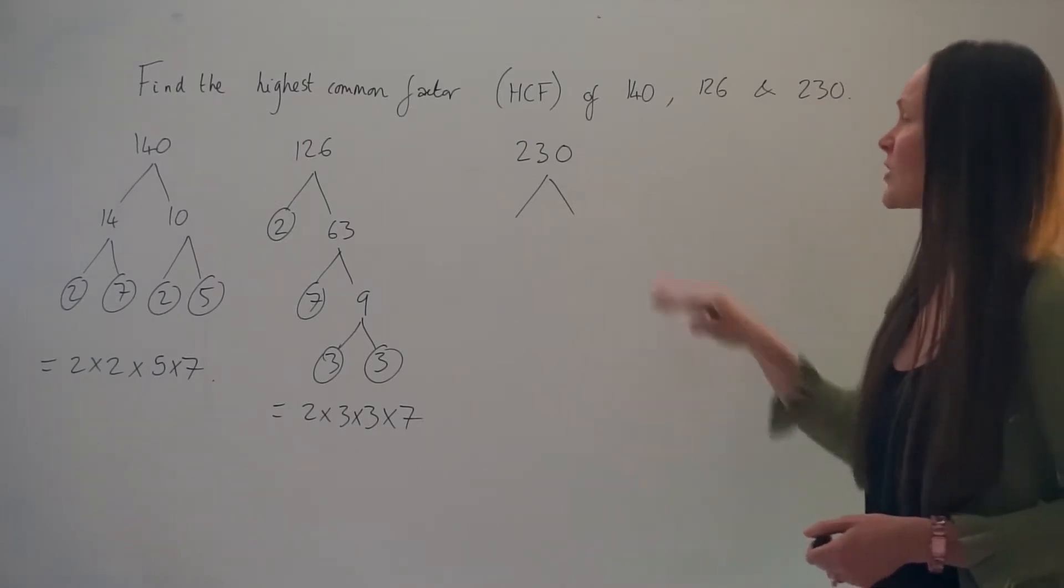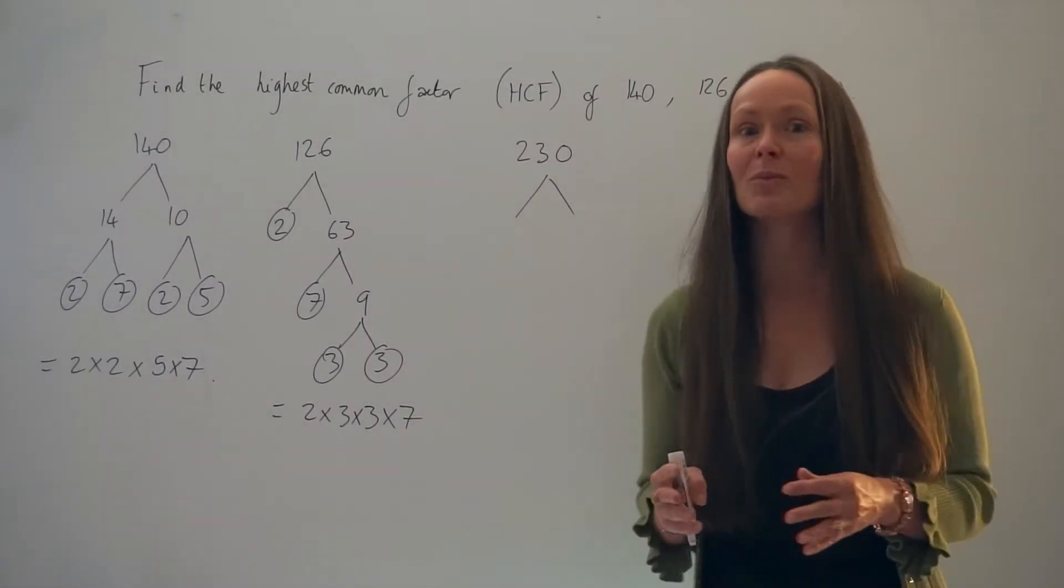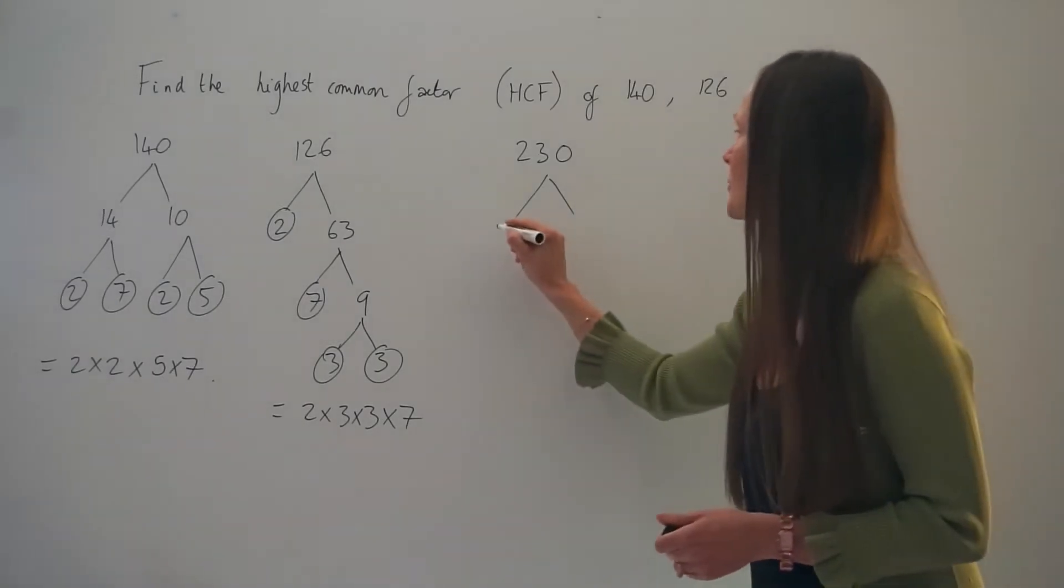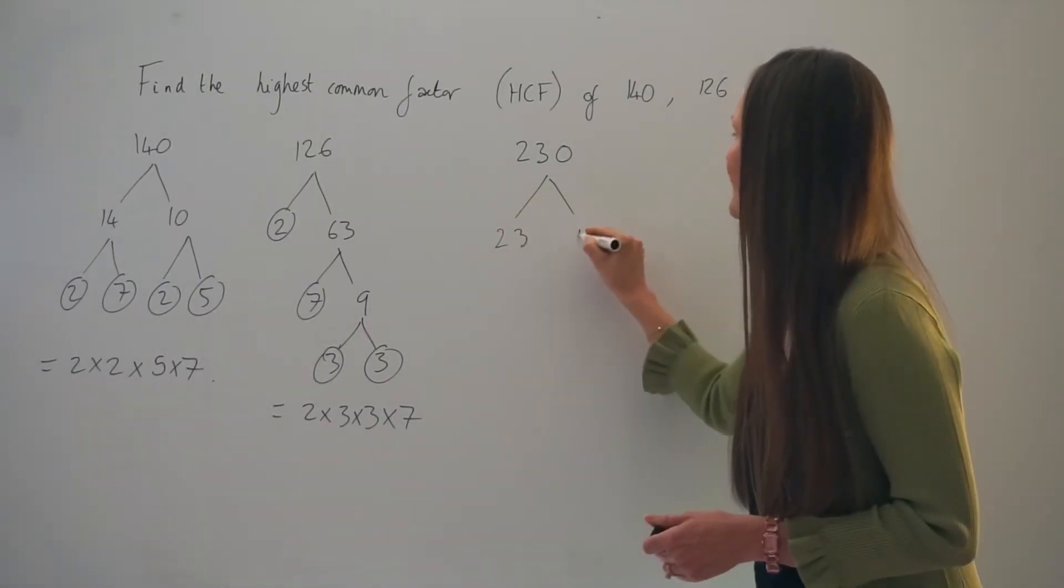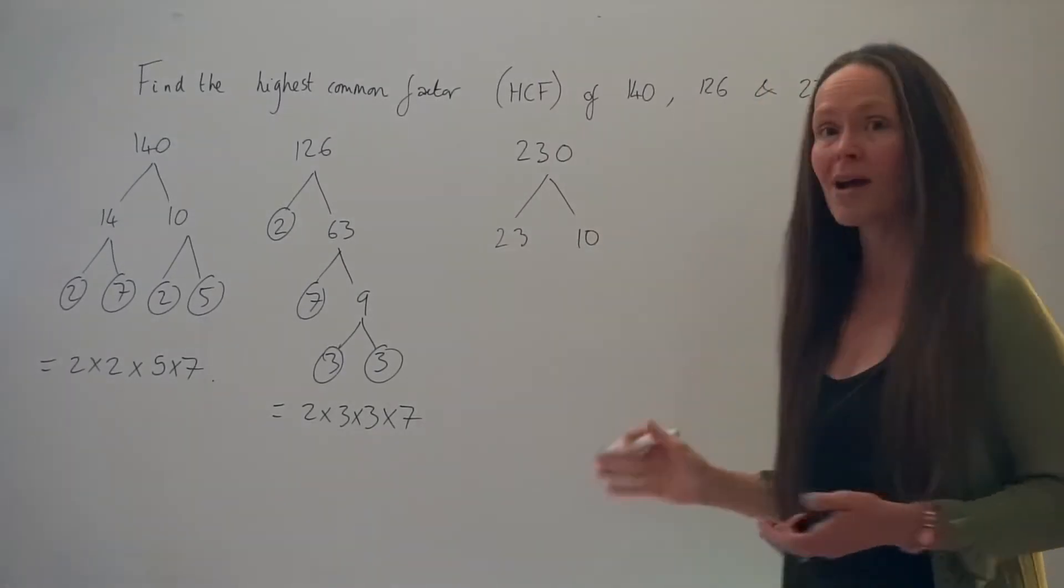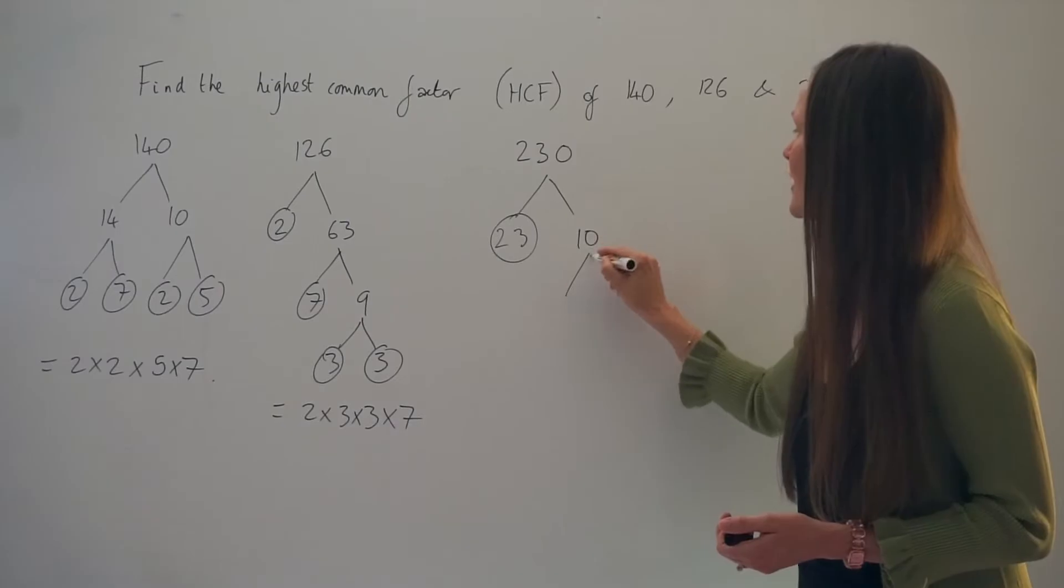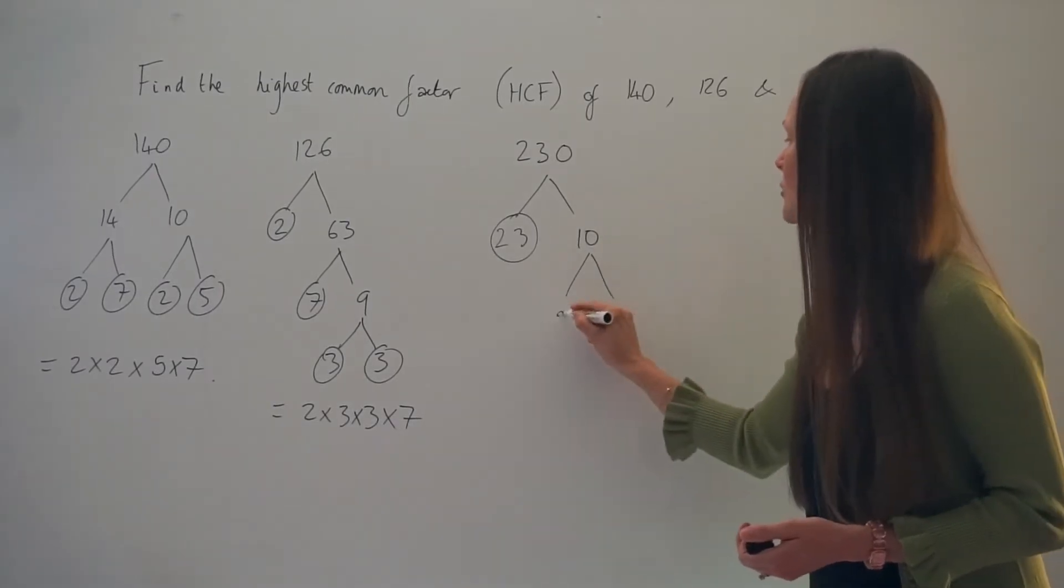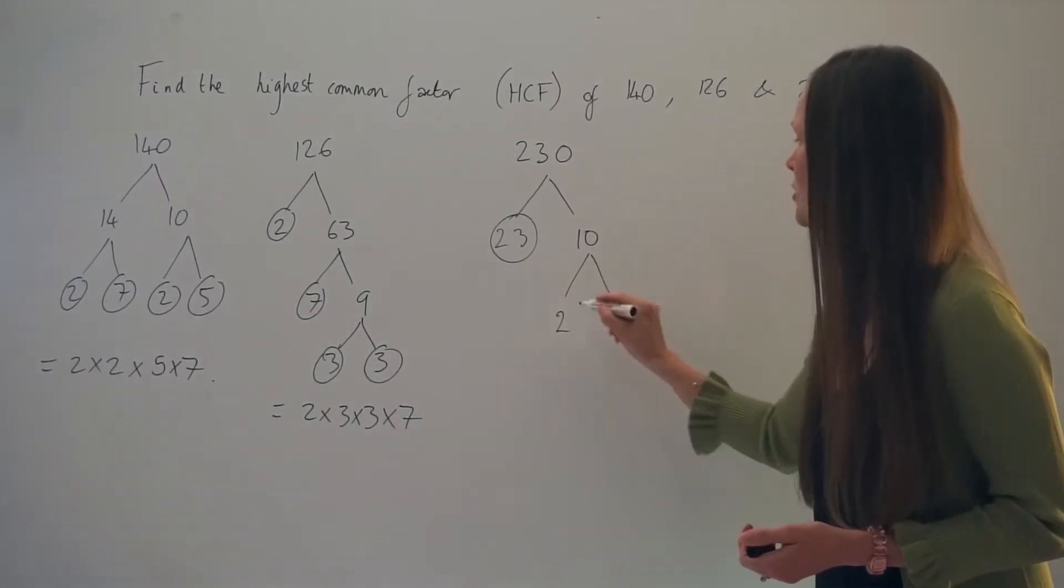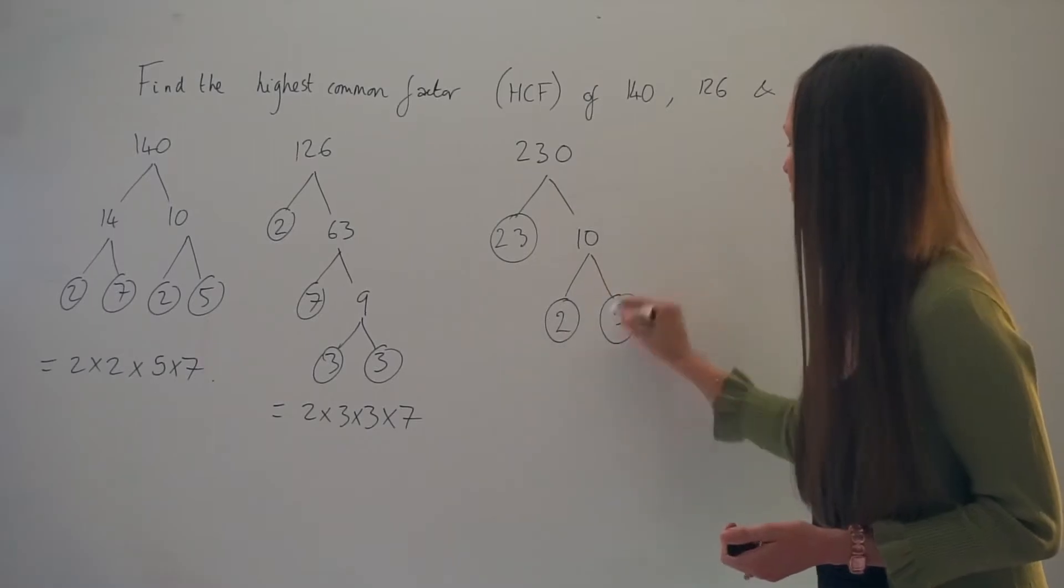I need to come up with two factors that multiply together to give 230, so I'm going to use 23 and 10. 23 is a prime number so I'm going to circle it, and two factors that multiply together to give 10 are 2 and 5, both of which are prime, so I'm going to circle those.